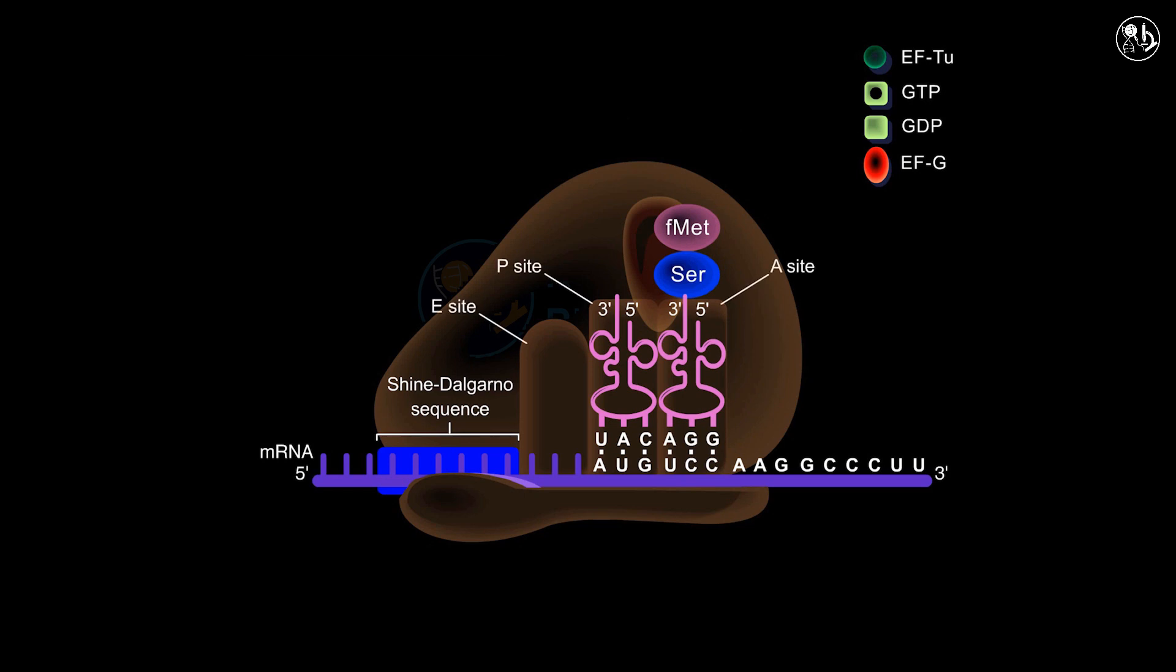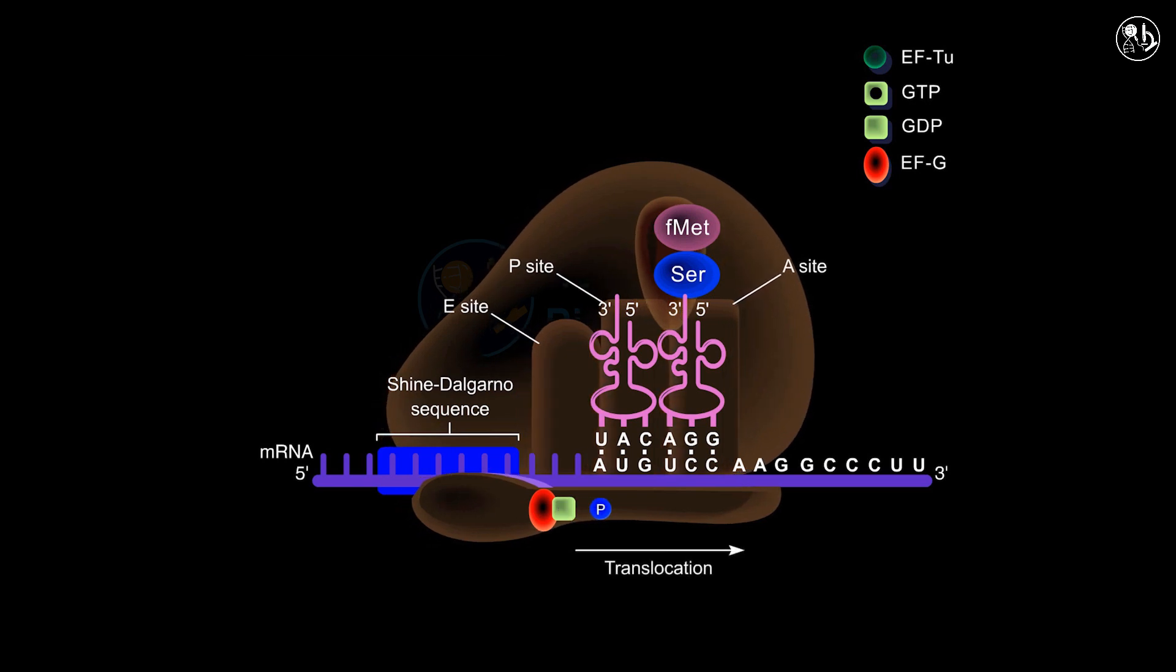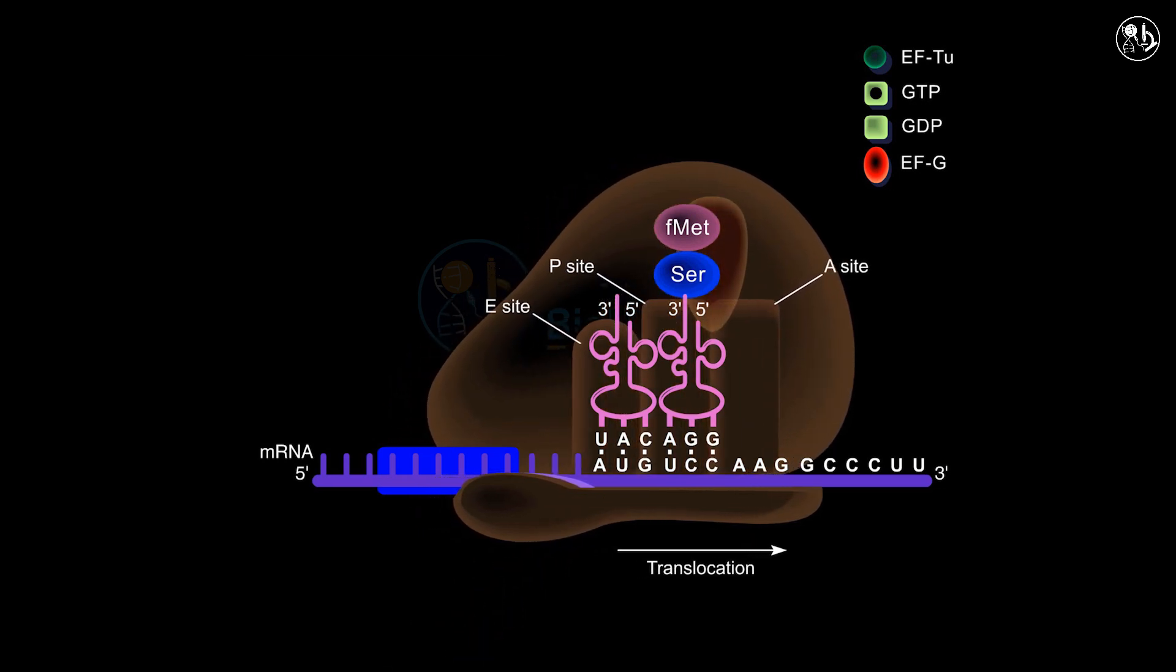After the peptide bond is formed, the P site contains an uncharged tRNA while the A site holds a tRNA linked to the nascent polypeptide chain. Assisted by EF-G and another molecule of GTP, the ribosome shifts one codon down the mRNA strand. The ribosome binds to an EF-G GTP complex, which triggers the hydrolysis of GTP and initiates the translocation process.